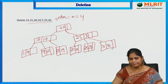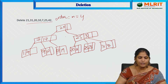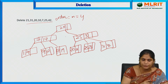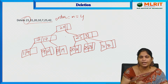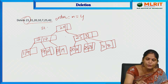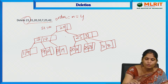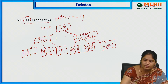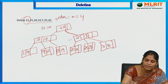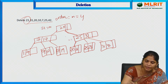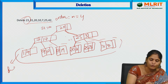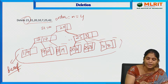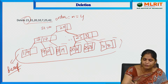This is the tree already constructed in our previous session. Now I should delete 21. From the root node we check: is 21 less than 20? No, it is greater than 20, so we go to the right part. Then we check whether 21 is less than 25 — yes, so we go to the left pointer. Since this is a leaf node, actual data is represented here, so 21 will be deleted from the leaf node directly.